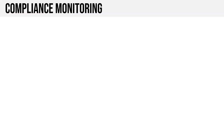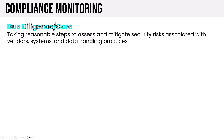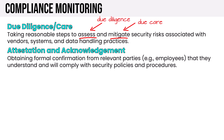Moving on to compliance monitoring. Due diligence and due care involve taking reasonable steps to assess and mitigate security risks associated with vendors, systems, and data handling practices. The assessment is due diligence, and then the actions — the mitigation — would be due care. Attestation and acknowledgement involves obtaining formal confirmation from relevant parties, like employees, that they understand and will comply with security policies and procedures, such as when employees read and sign that they agree to an acceptable use policy.